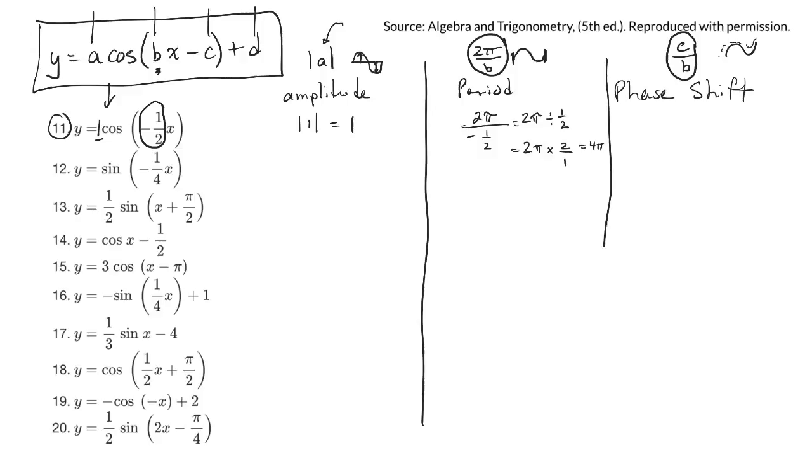Okay, so that would be the period for that graph. Phase shift is how far I move left to right. And that's C over B. So C over B. So C, oh, there's nothing in there. There's nothing beside that x there.